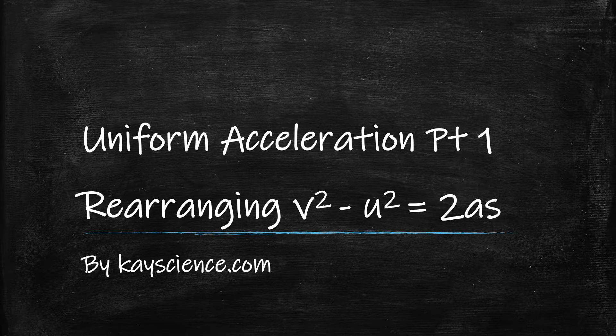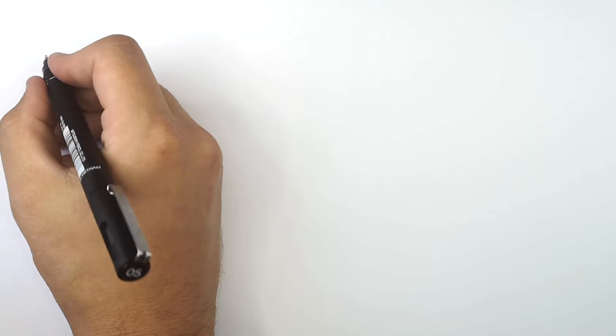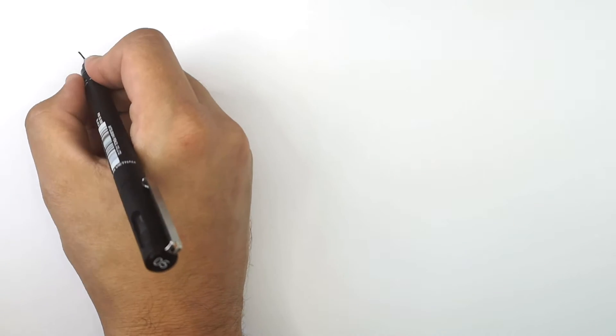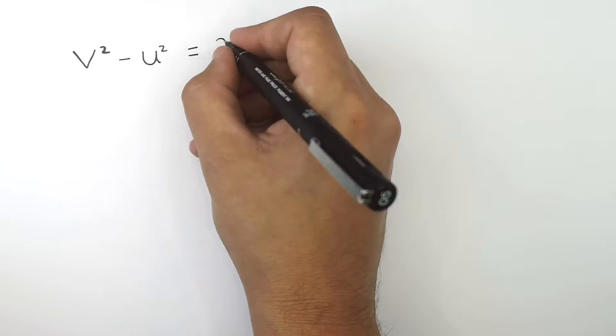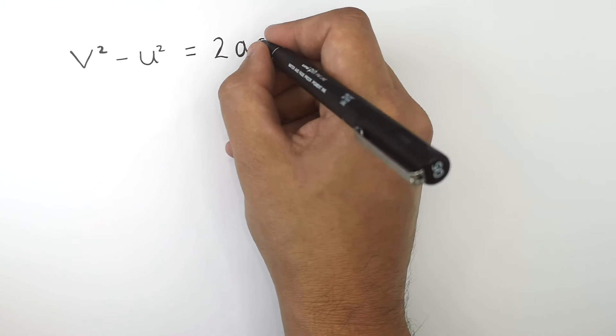Uniform Acceleration. Learning to rearrange V-squared minus U-squared equals 2AS by KScience.com. You must remember this equation: V-squared minus U-squared equals 2AS.